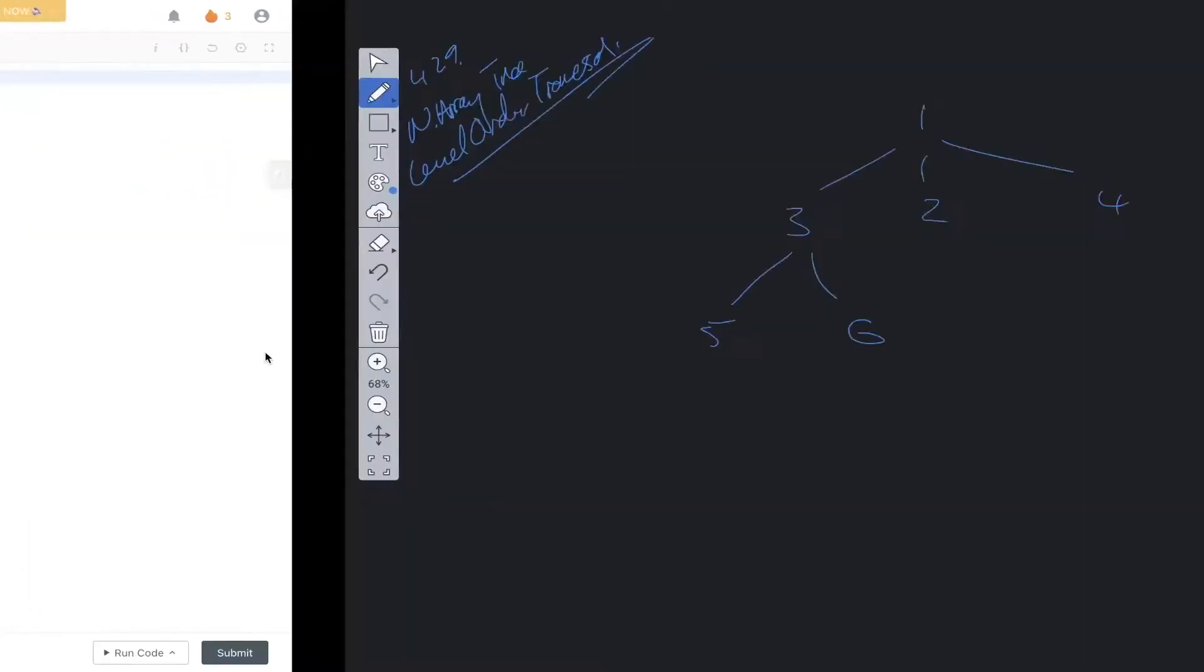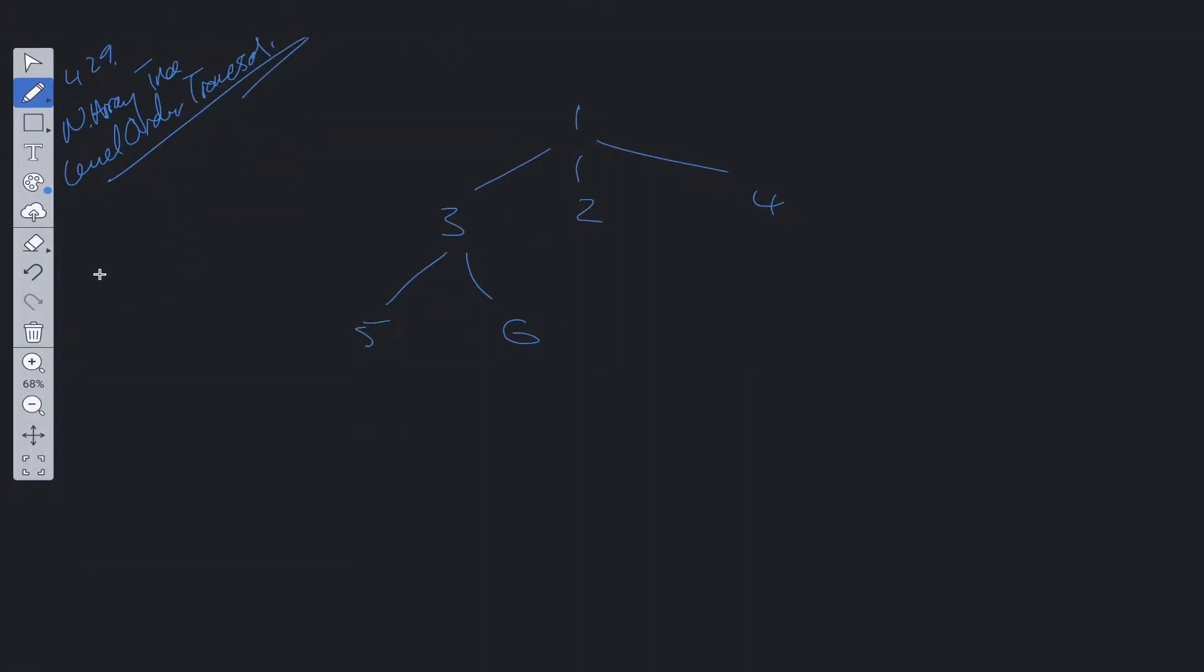So how do we solve this? Because it's asking for level order traversal, we are going to be using breadth first search. Breadth first search uses a queue data structure which restricts the process in order of first in, first out. We are going to need some kind of level size to keep track of the inner loop within the BFS. We'll have the level which will be equal to an array, and we also need a results array.